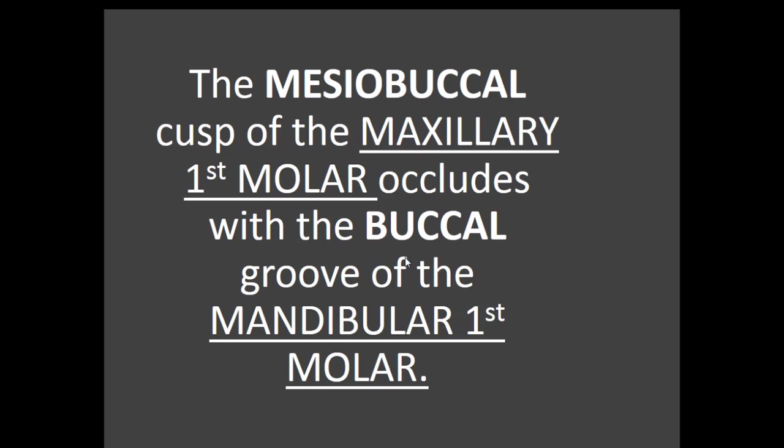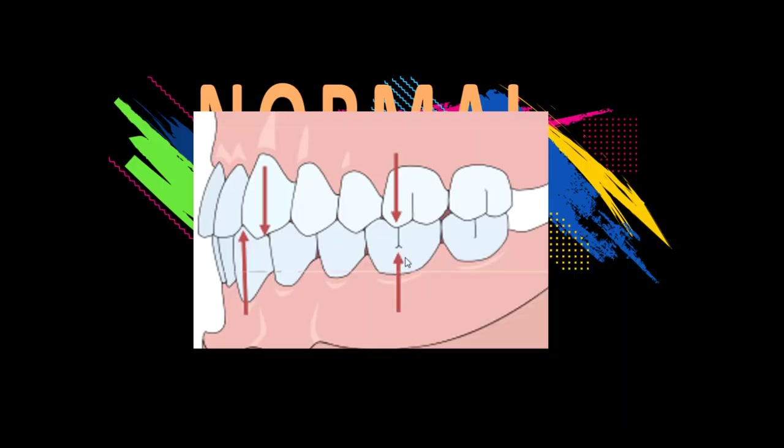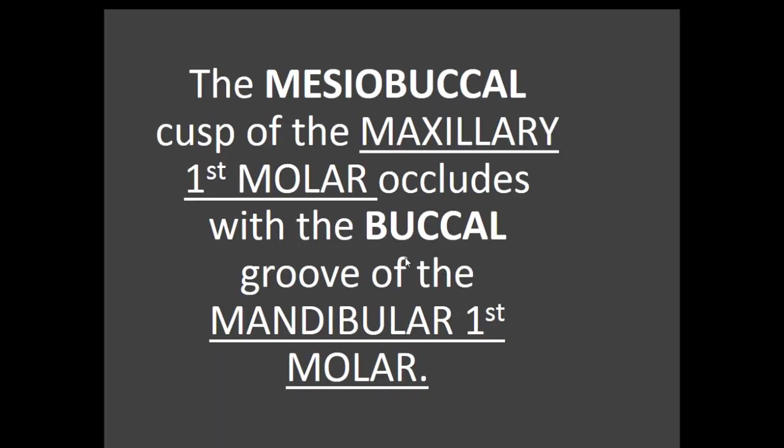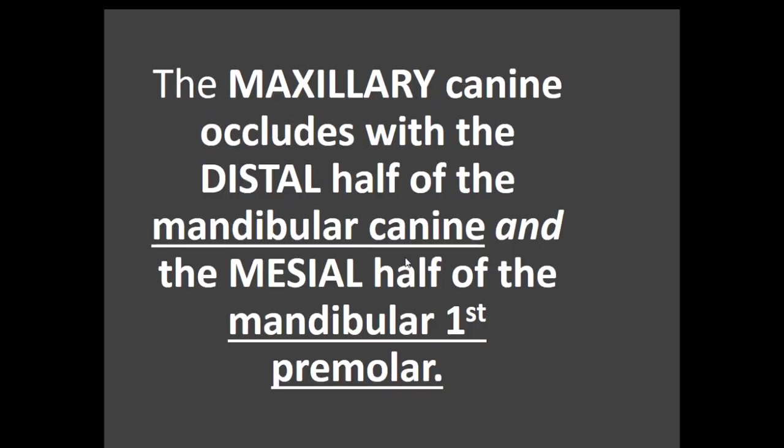Now let's look at this written out. The mesial buccal cusp of the maxillary first molar — visualize number 3 or 14 — occludes with the buccal groove of the mandibular first molar. So you can see that number 14 is occluding to the buccal groove of number 19. For the canine relationship, the maxillary canine occludes with the distal half of the mandibular canine and the mesial half of the mandibular first premolar.